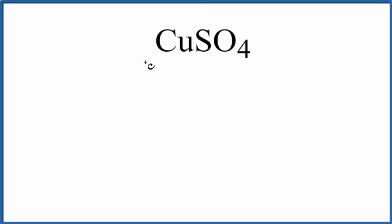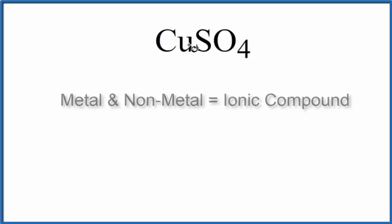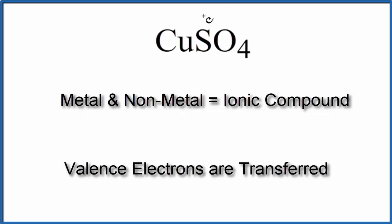In this video, we'll draw the Lewis structure for CuSO4. This is copper(II) sulfate. We have an ionic compound here - a metal bonded to a group of nonmetals. This is a polyatomic ion, the sulfate ion, making this an ionic compound.